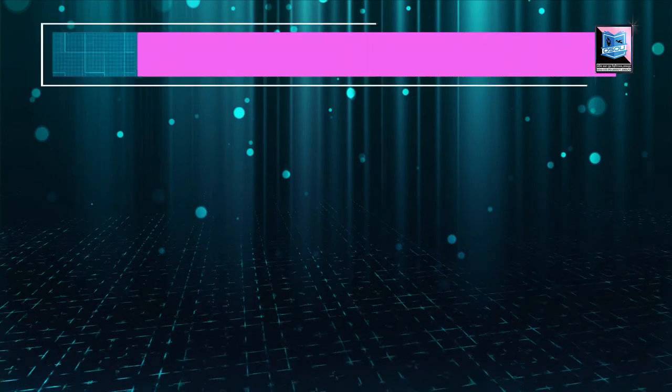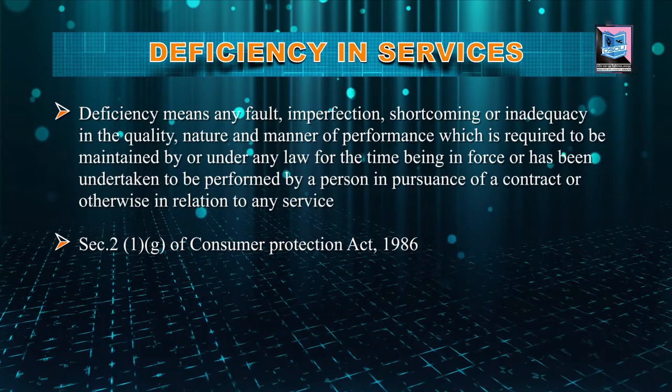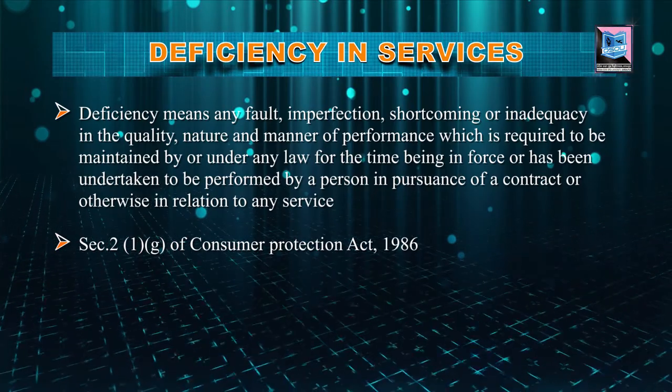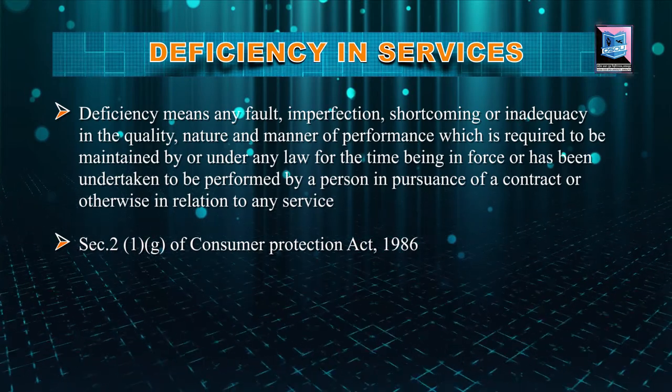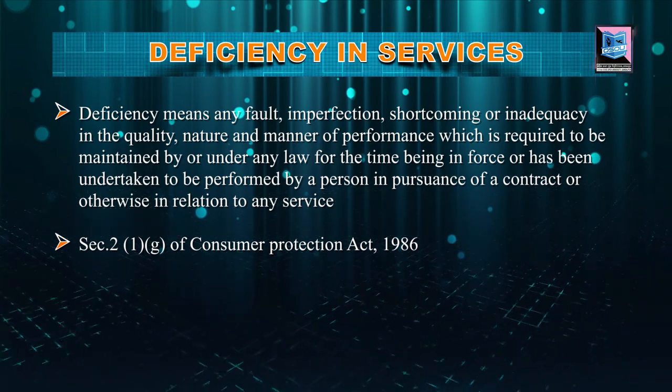Then we come to a consumer dispute — the last important provision under the Consumer Protection Act. If you do not have a dispute, the consumer forum will not accept your application. You should have a consumer dispute. For example, if a person has filed an allegation and the manufacturer is accepting it, that cannot be considered a consumer dispute. A consumer dispute arises and has been defined under Section 2(1)(e), where it says if the manufacturer or service provider is denying the allegation — saying he has not provided poor quality or denying the complaint — then only a consumer dispute arises, after which relief or compensation is provided. If a consumer dispute does not arise, there is no question of compensation, relief, or replacement of product or services.